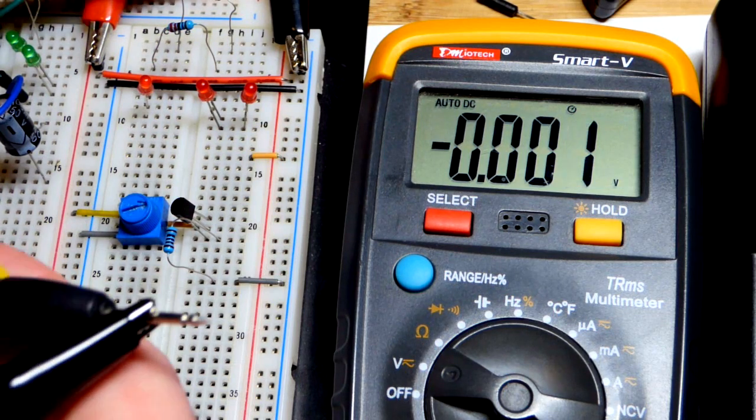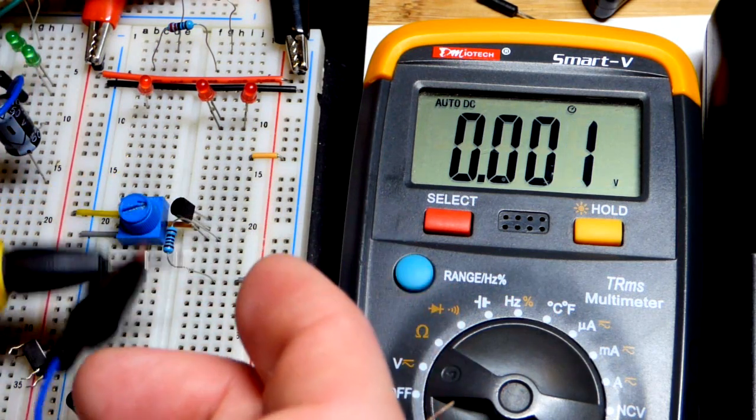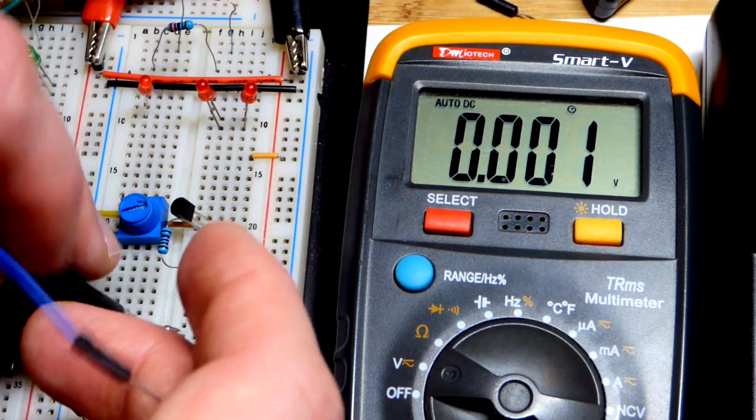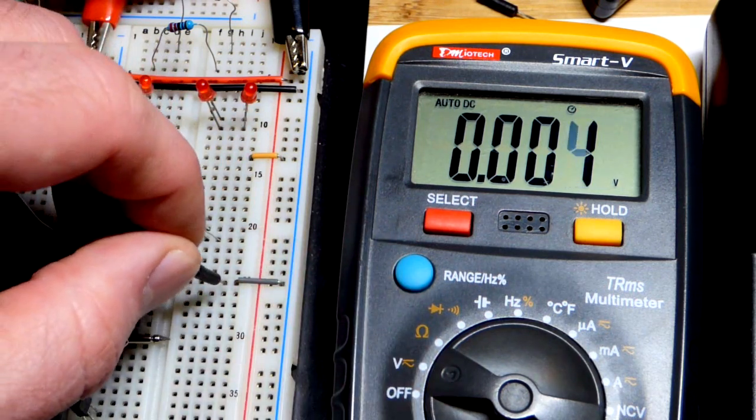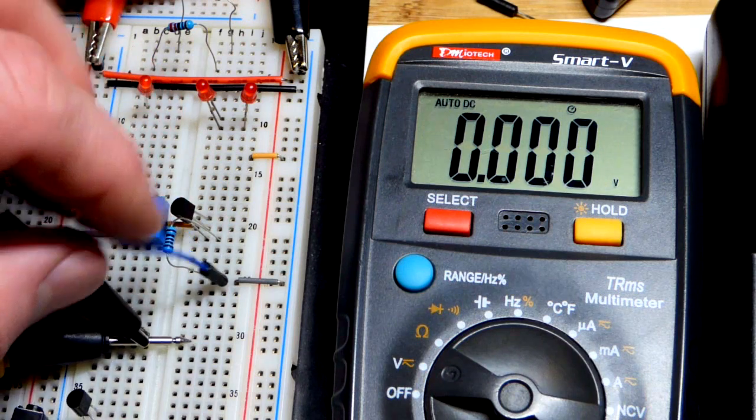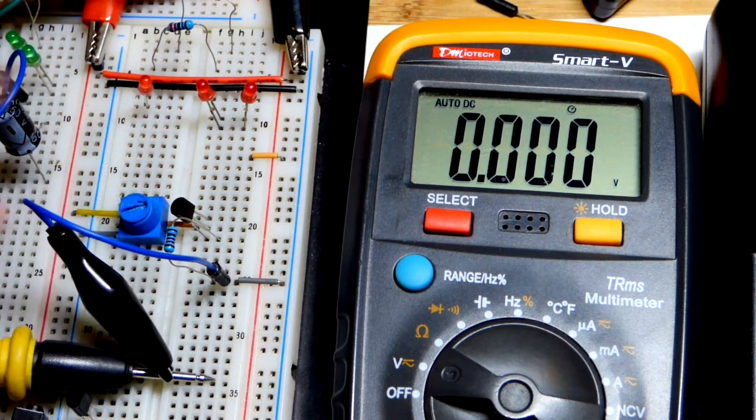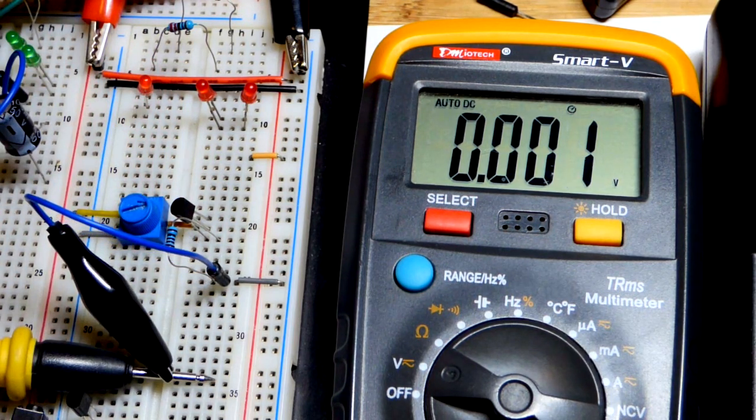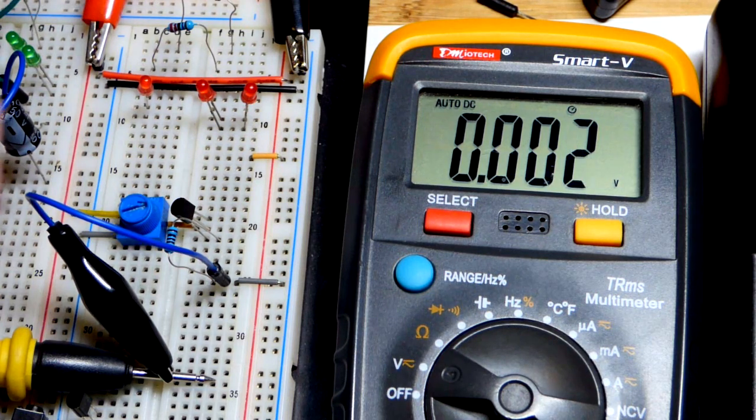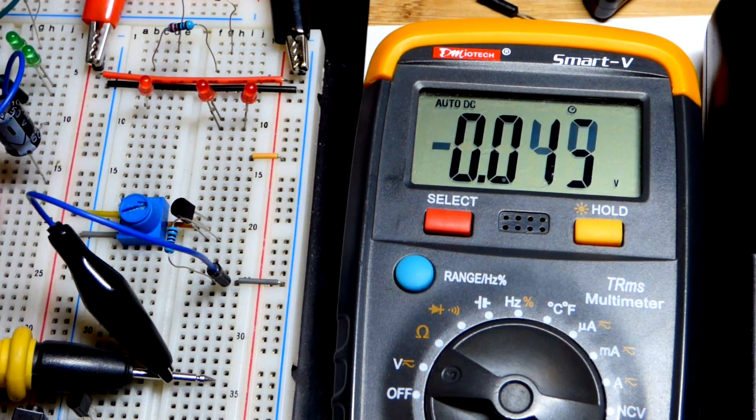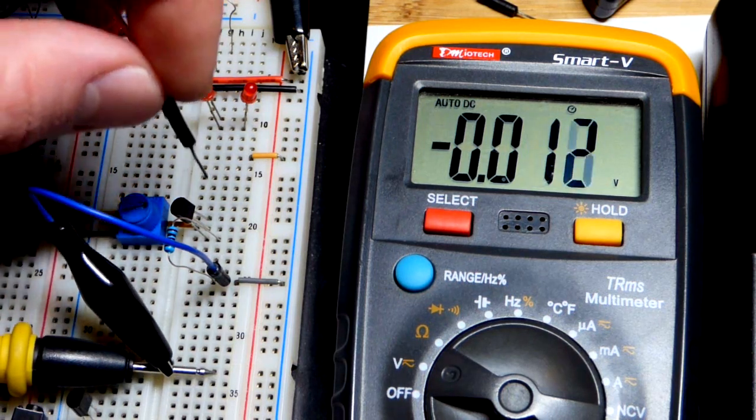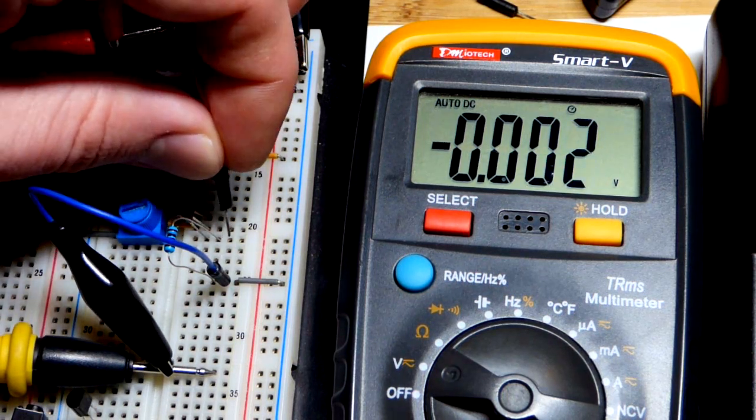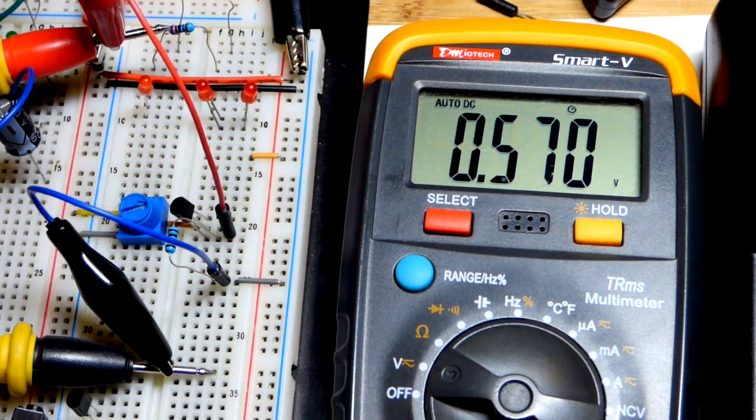We will take the black probe with the blue jumper and connect that. We can either put it to the negative rail or right to the resistor. It might make more sense if we go right to the resistor right there. And the red one, let's clip that again. We're going to go to the opposite side of the resistor and try not to short out on anything like I did earlier before I shot this scene.